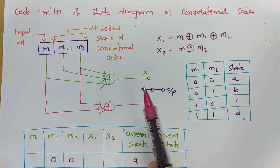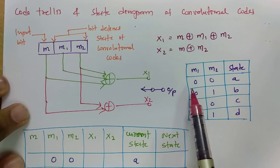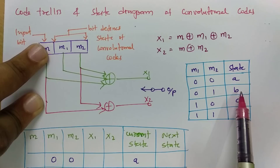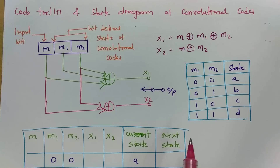As m1 and m2 justify the state, we have predefined states: if m1 and m2 is 00, the encoder will be in state A; if 01, it will be in state B; if 10, it will be in state C; and if 11, it will be in state D. Before drawing the code trellis and state diagram, we should calculate all possible combinations for this convolution encoder.